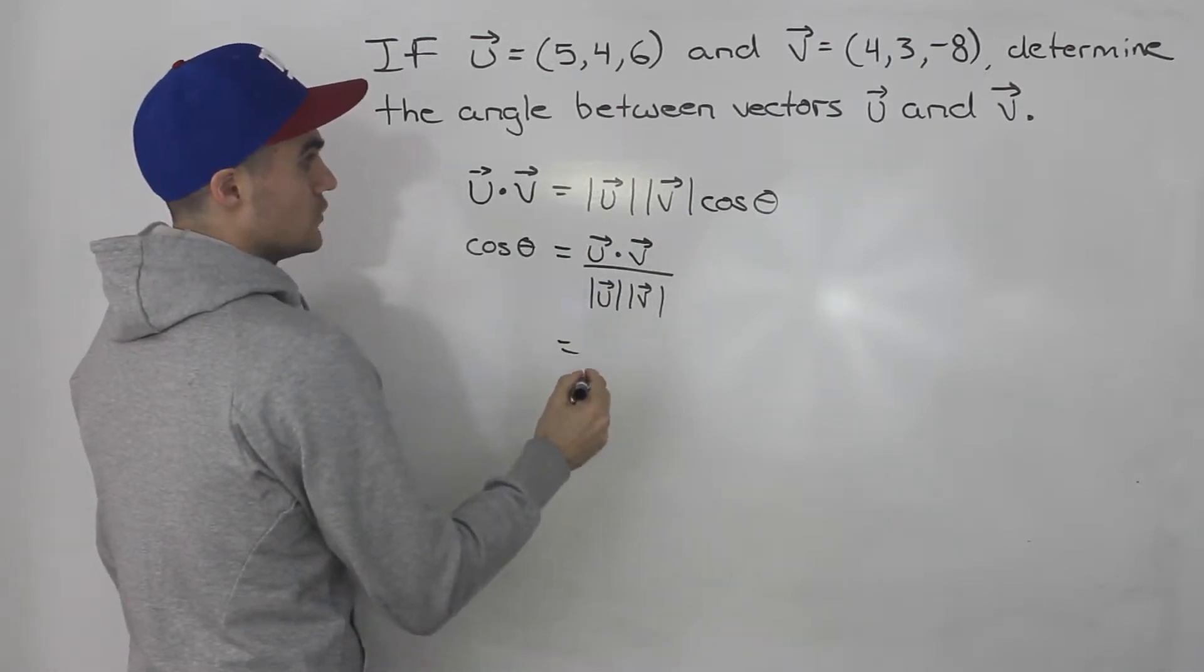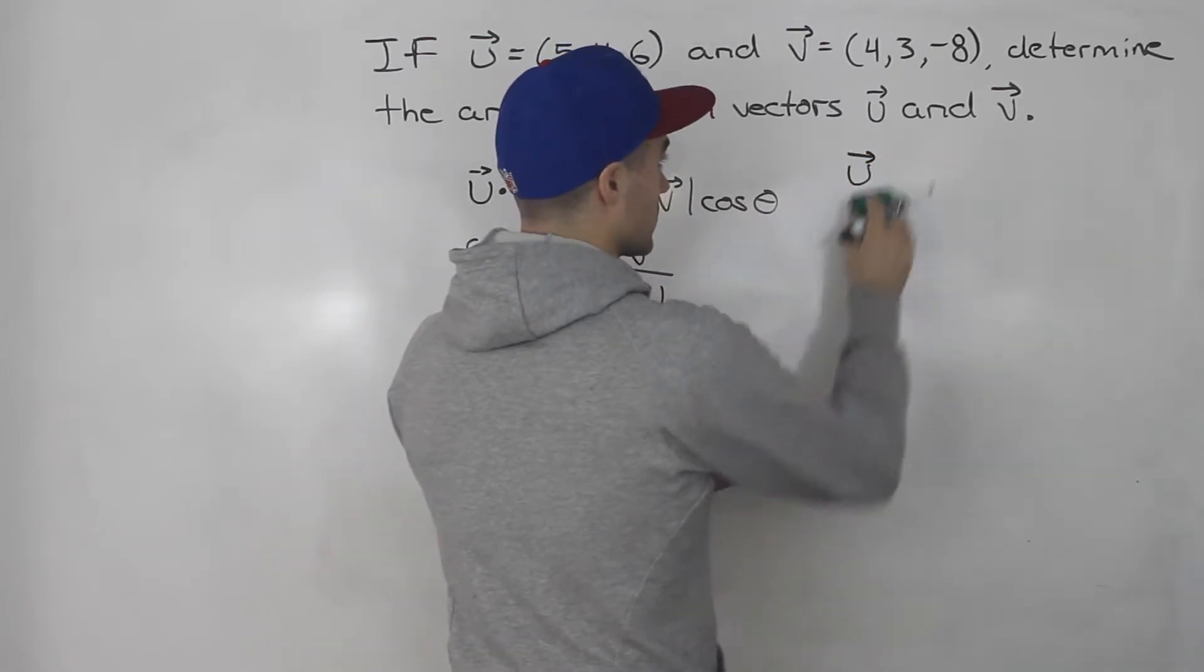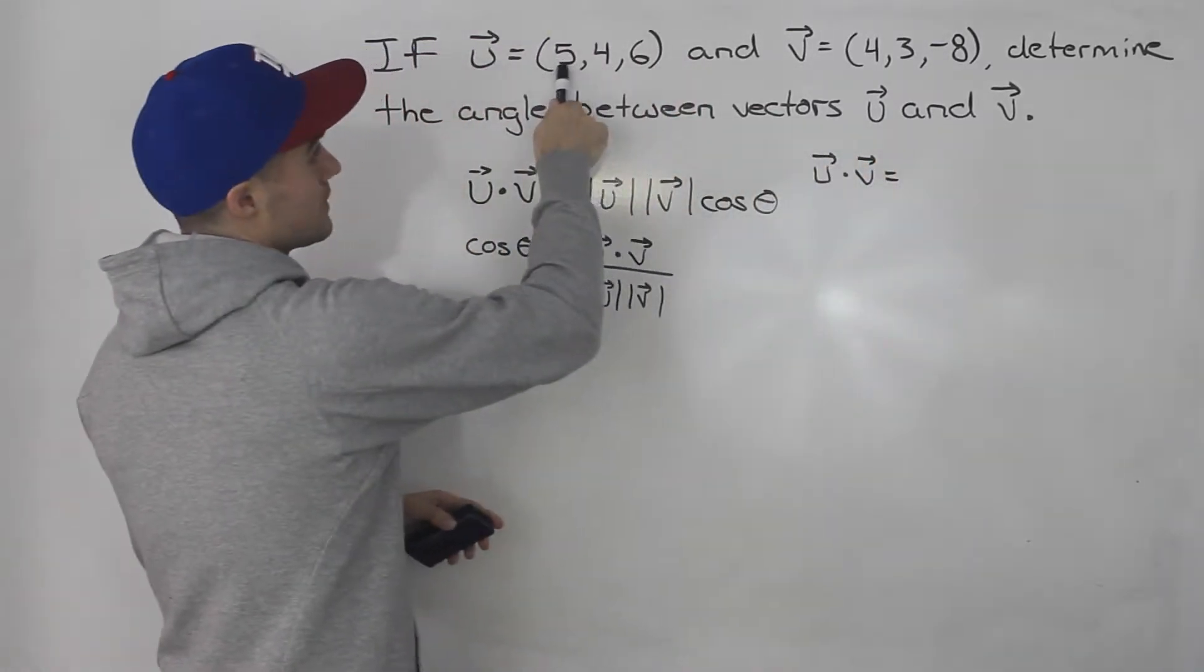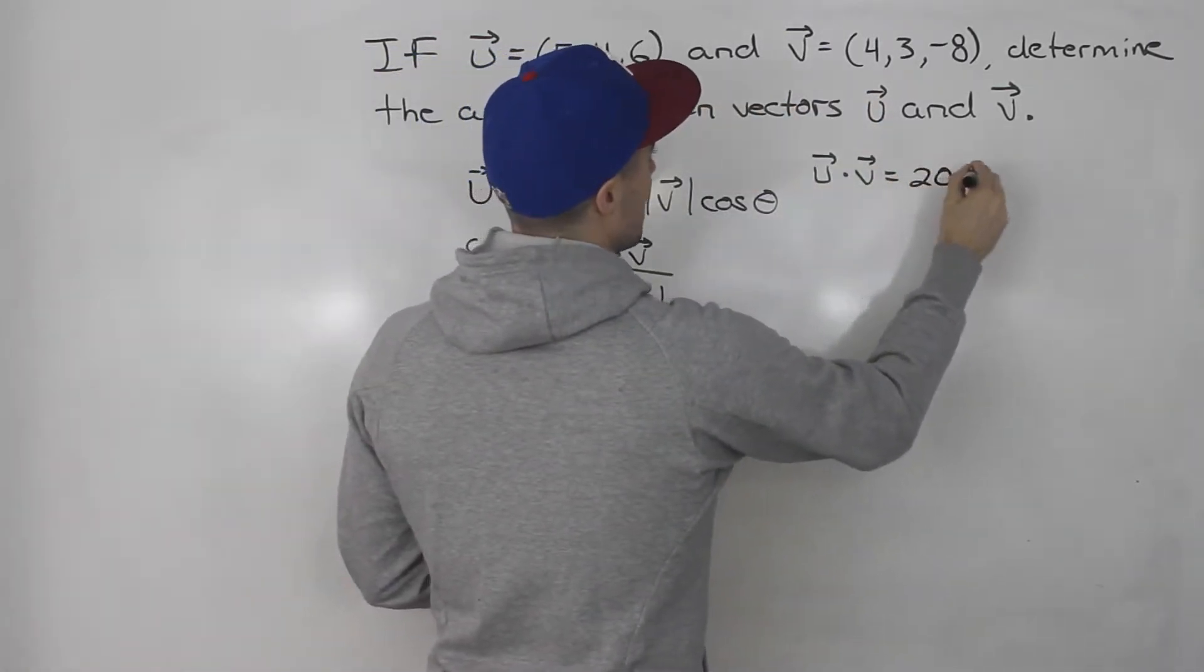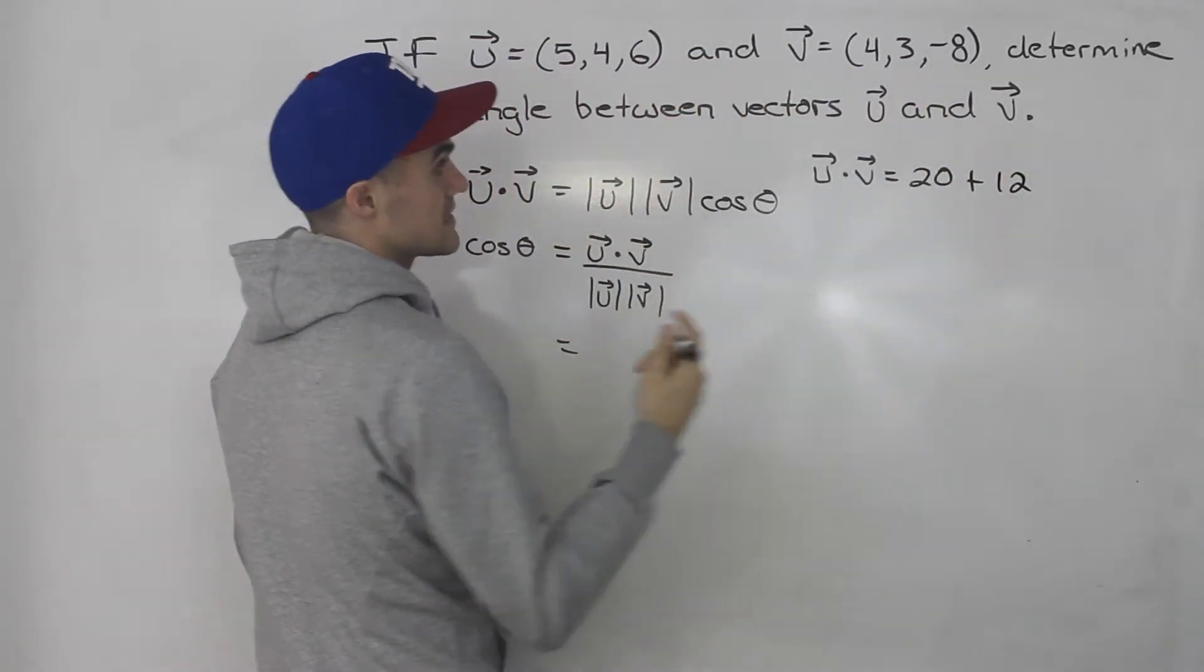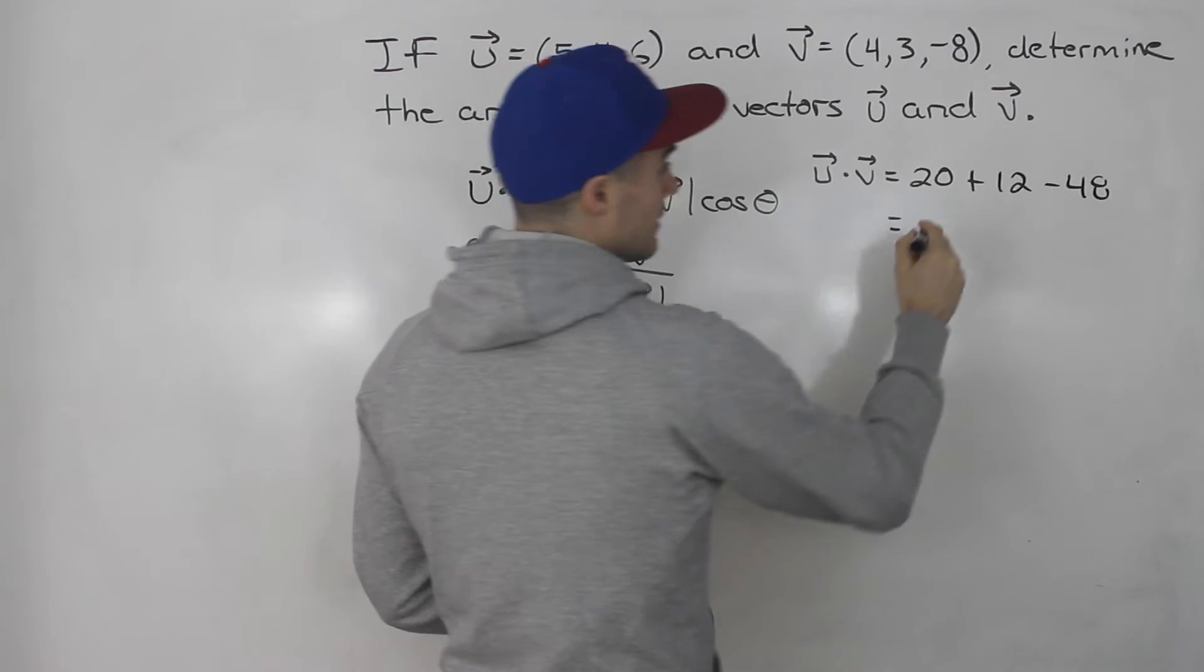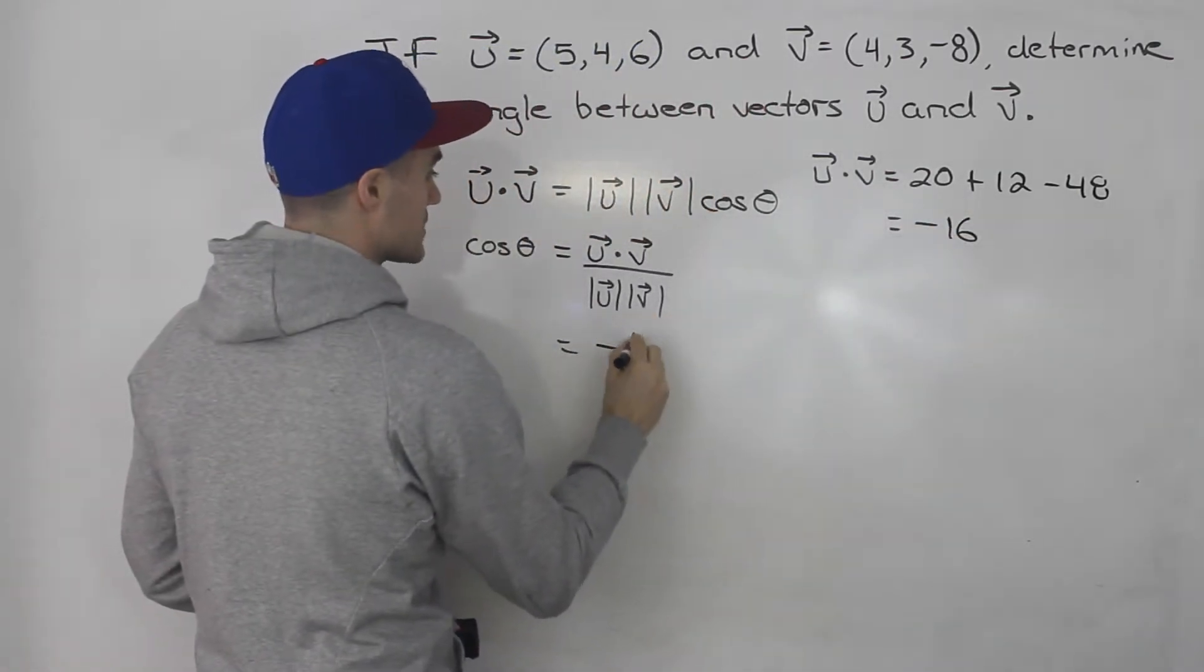So what's the dot product of u and v going to be? We can do that on the side. So u dot v: the x coordinates multiplied by each other, so 5 times 4 is 20, plus 3 times 4 which is 12, negative 8 times 6 is negative 48. So 20 plus 12 is 32 minus 48, that gives us negative 16.